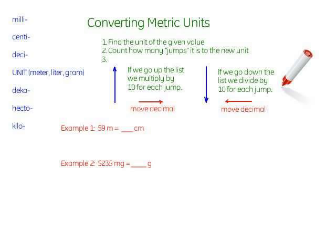So if we go down the list we divide by 10 for each jump. Now it turns out that dividing by 10 is the same as moving the decimal to the left.